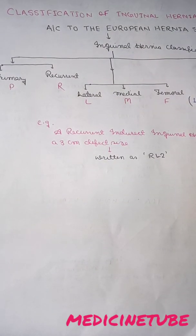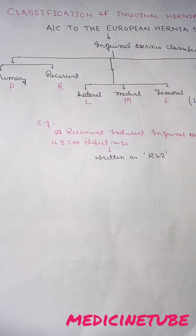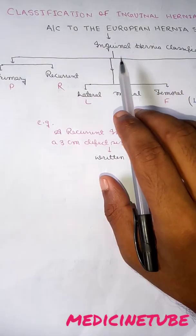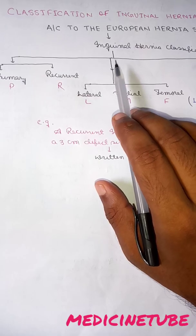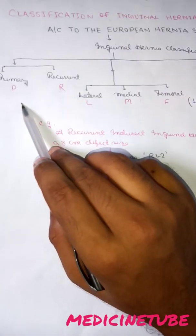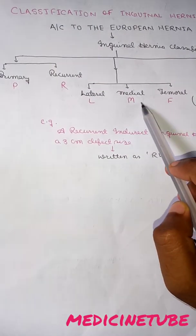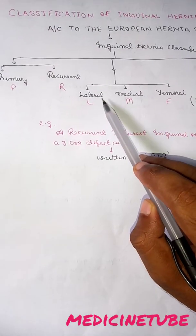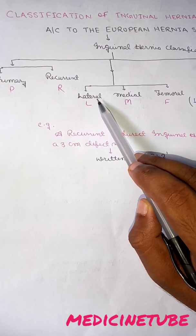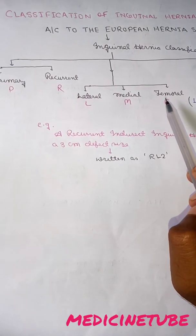Now we will talk about the classification of inguinal hernia, as given by the European Hernia Society, which is the proposed method to record the hernia. Inguinal hernia is classified based on three things. First, whether it is primary or recurrent. Second, its position: lateral, medial, or femoral — lateral meaning lateral to the inferior epigastric vessels, medial meaning medial to the inferior epigastric vessels, and femoral.